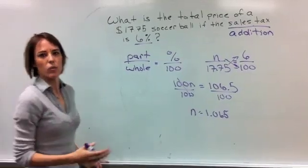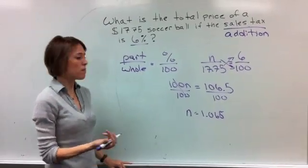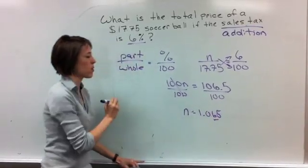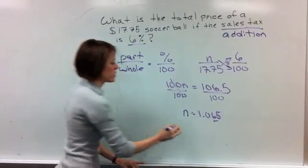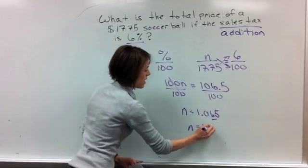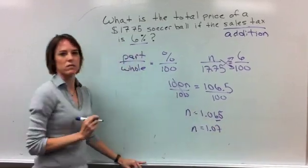Now something to remember here is that we're talking about money. So when we're doing our money, we have to round to the nearest hundredth. So that 1.065 would round to n equals $1.07.